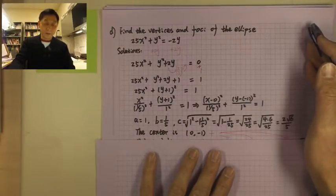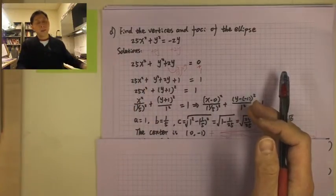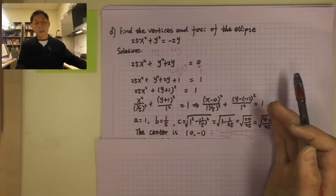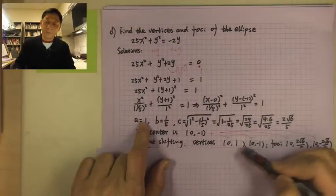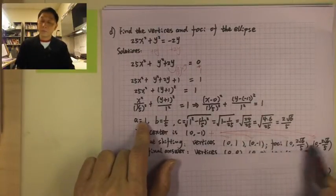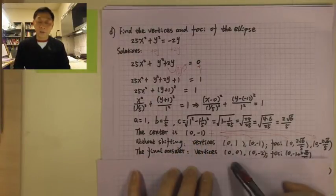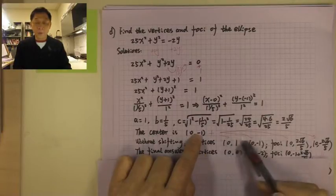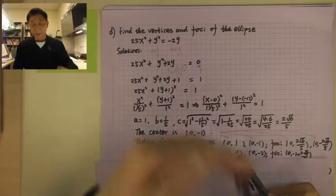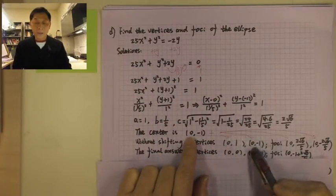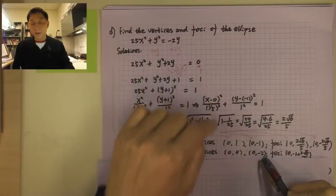The ellipse is in the vertical direction since the big number a = 1 is underneath y. So the vertices are (0, ±a) and the foci are (0, ±c). Now we add the center (0, negative 1) to every point. For the top vertex: 0 + 0 = 0 and negative 1 + 1 = 0, giving (0, 0). For the bottom vertex: 0 + 0 = 0 and negative 1 + (negative 1) = negative 2, giving (0, negative 2).